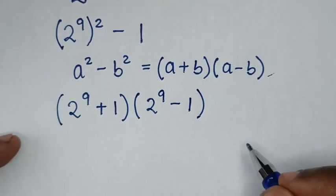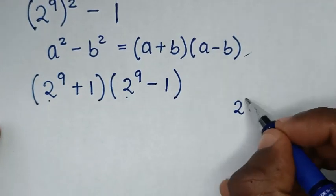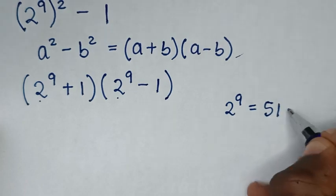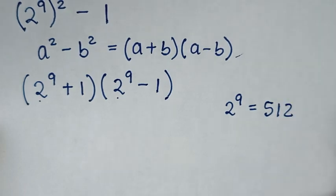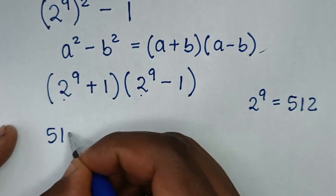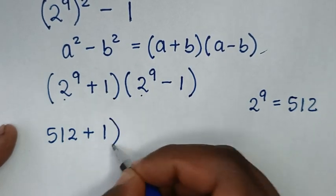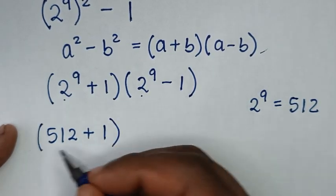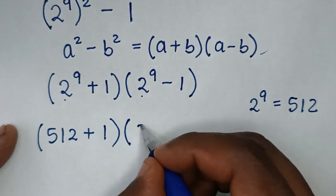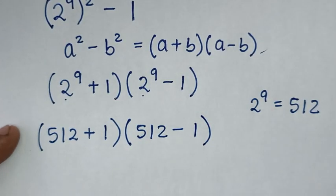In the next step, 2 power of 9 is equal to 512. So from here 2 power of 9 it is 512, then plus 1, bracket, then times bracket 2 power of 9 which is 512, then minus 1, bracket.